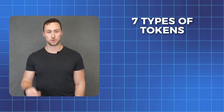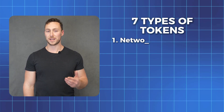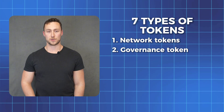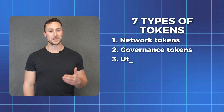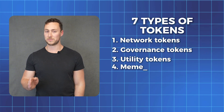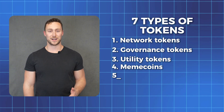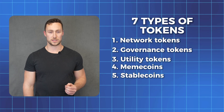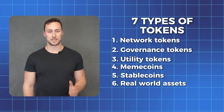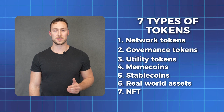In this video, we're going to focus on seven types of tokens: one, network tokens; two, governance tokens; three, utility tokens; four, meme coins; five, stable coins; six, real world assets; and seven, NFTs.